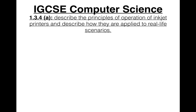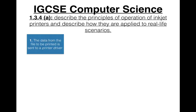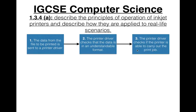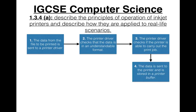Both technologies follow this basic algorithm when printing. First, data from the file to be printed is sent to a printer driver — this can be from a computer. The printer driver checks that the data is in an understandable format. The printer driver then checks if the printer is able to carry out the print job — for example, if it's busy, if there's a paper jam, no ink, or some other error, a message is sent back. If there are no problems, the data is sent to the printer and stored in a printer buffer — a temporary memory location.